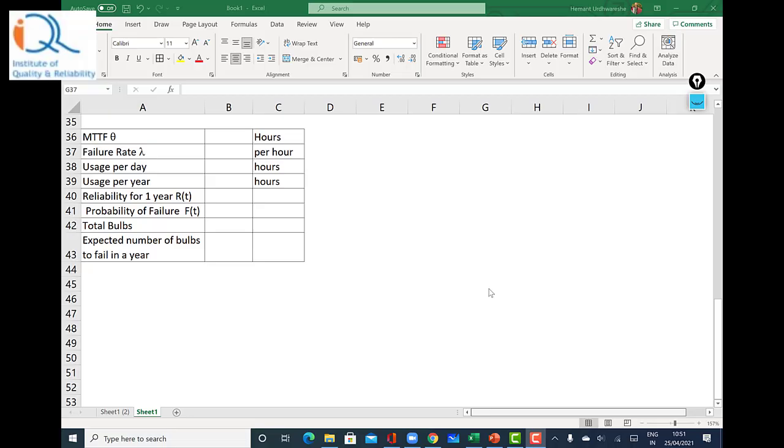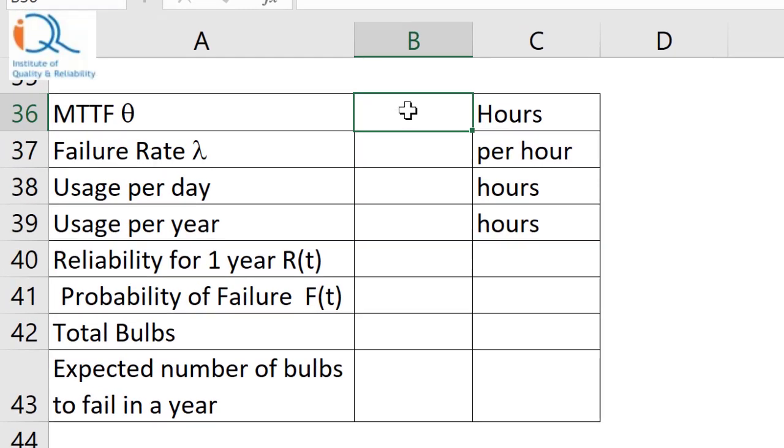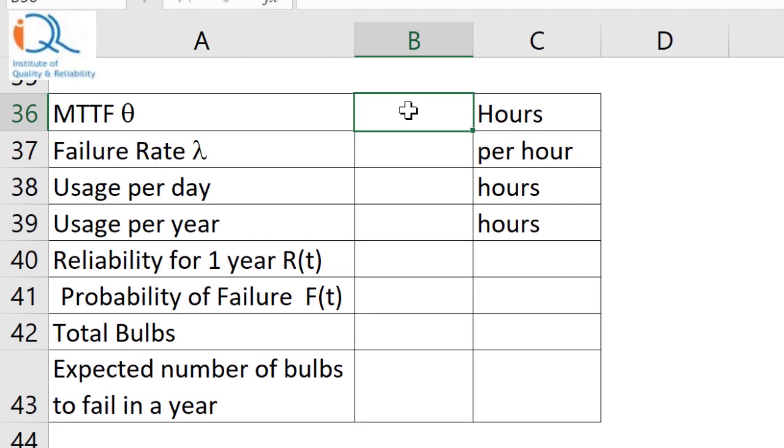It is easy and convenient to perform calculations on Excel. MTTF of theta is equal to 15,000. Failure rate lambda is reciprocal of 15,000 so it's equal to 1 upon 15,000.